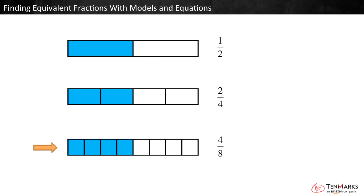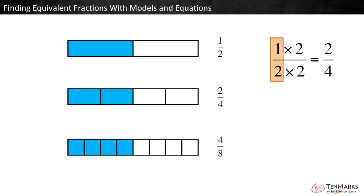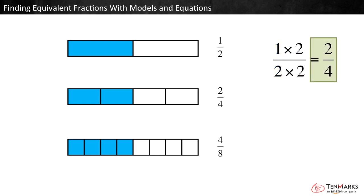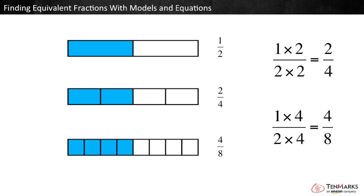You can find equivalent fractions by multiplying the numerator and denominator by the same number. For example, in this equation, the numerator and denominator of one half are both multiplied by two. The result is two fourths, which is an equivalent fraction for one half. Similarly, if we multiplied the numerator and denominator of one half each by four, we would get four eighths, the other equivalent fraction shown.